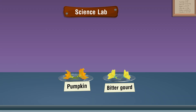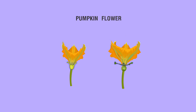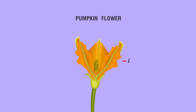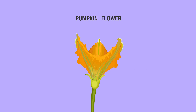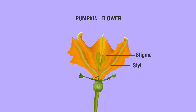Similarly, a few other flowers have similar features, such as pumpkin flower. They have five petals and five sepals. The male flower contains the male reproductive parts — anther and filament. The female flower contains stigma, style, and ovary.